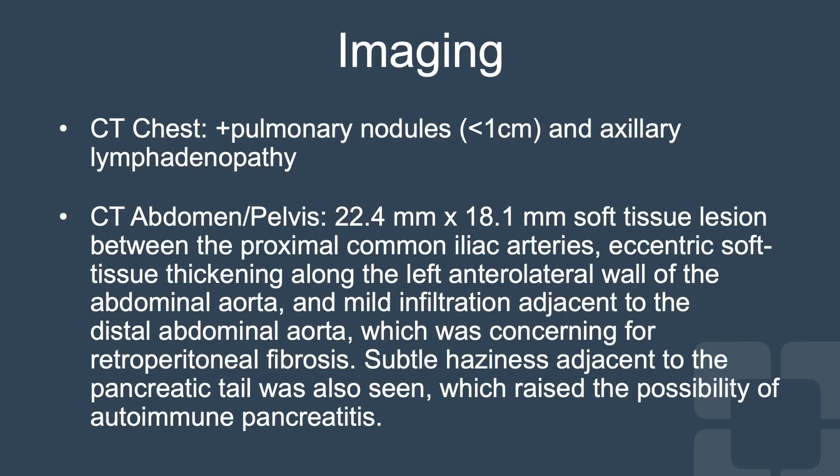CT scan of her chest demonstrated multiple pulmonary nodules and axillary lymphadenopathy. CT scan of her abdomen and pelvis demonstrated a 22.4 mm x 18.1 mm soft tissue lesion between the proximal common iliac arteries, eccentric soft tissue thickening along the left anterior lateral wall of the abdominal aorta, and mild infiltration adjacent to the distal abdominal aorta, which was concerning for retroperitoneal fibrosis.